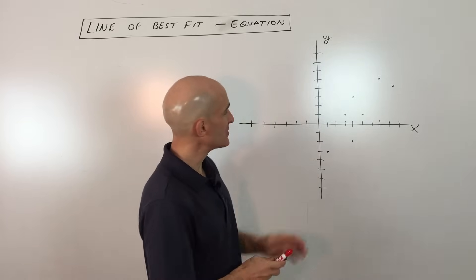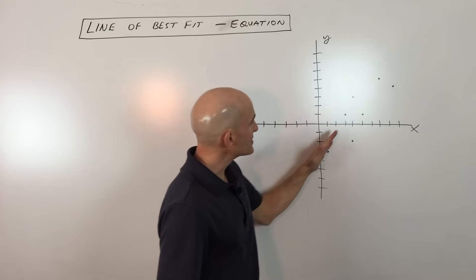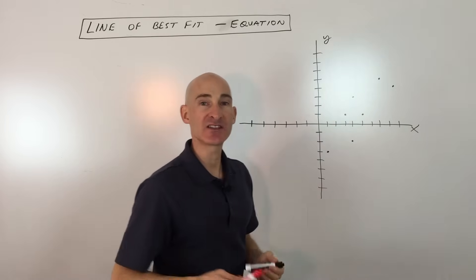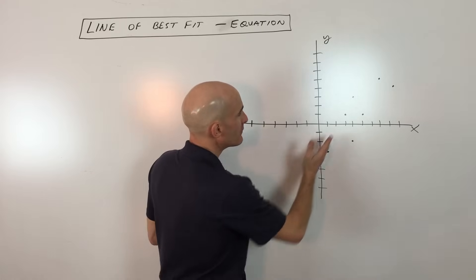So I've drawn a scatter plot here and you can see these individual data points and you can see the general trend is going up to the right, that means it has a positive correlation. But what we want to do here in this video is talk about how do we approximate